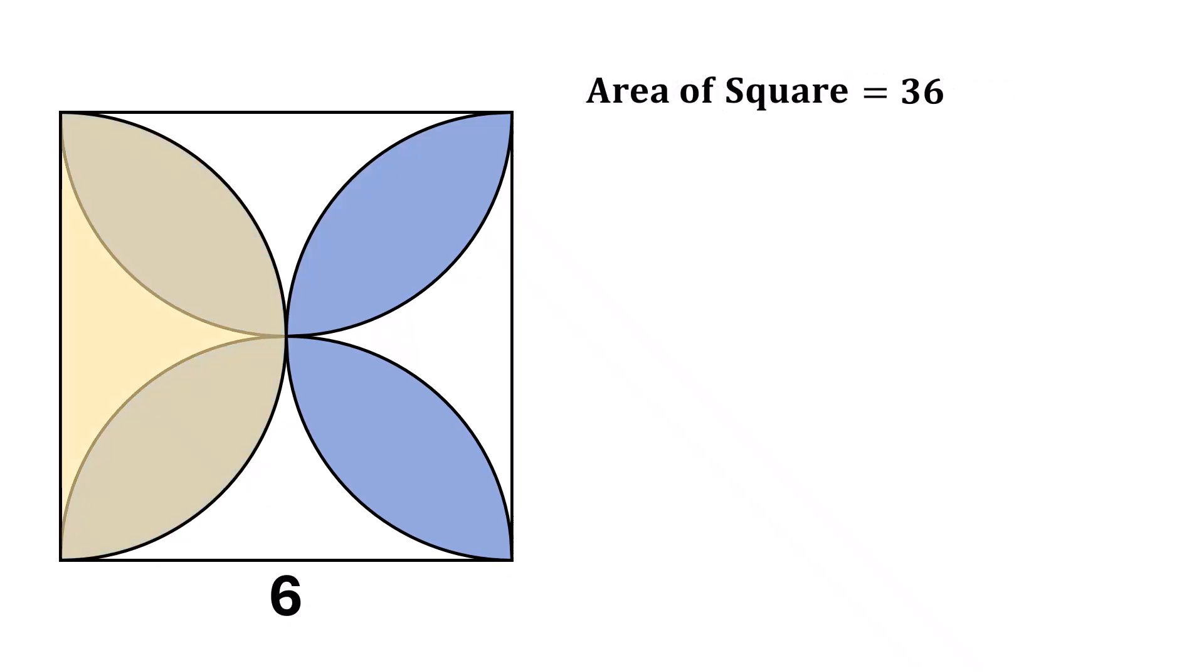Now, take a look at this yellow half circle. The diameter of this circle is 6 units. That means the radius is half of that, 6 divided by 2, which gives us 3 units.